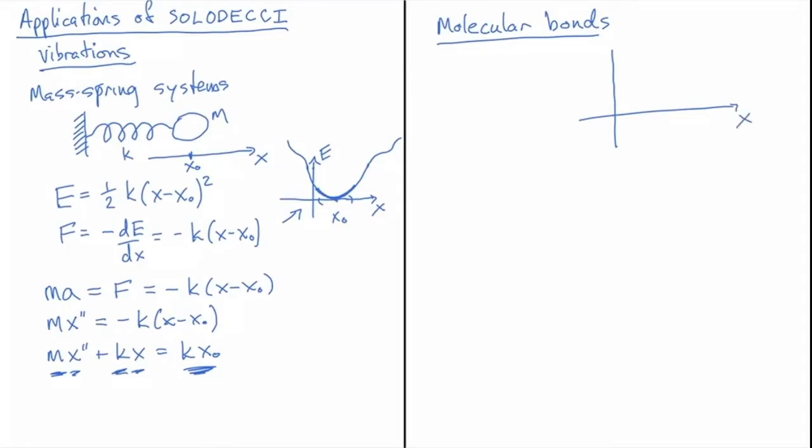So there's something called a Morse potential, which describes the energy stored in the bond. And I'm going to draw the bond as a spring here. And so the Morse potential is something that looks like this. It has an asymptote at zero and then it gradually approaches zero as X goes to infinity. So that is the Morse potential...